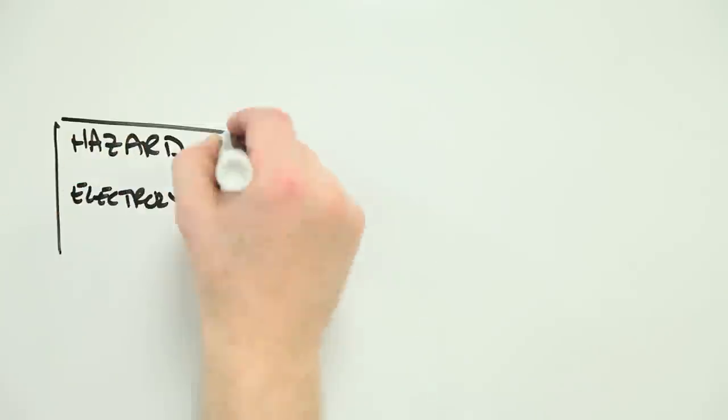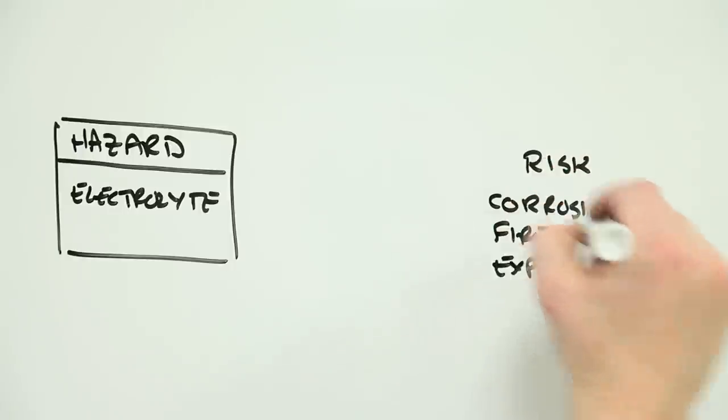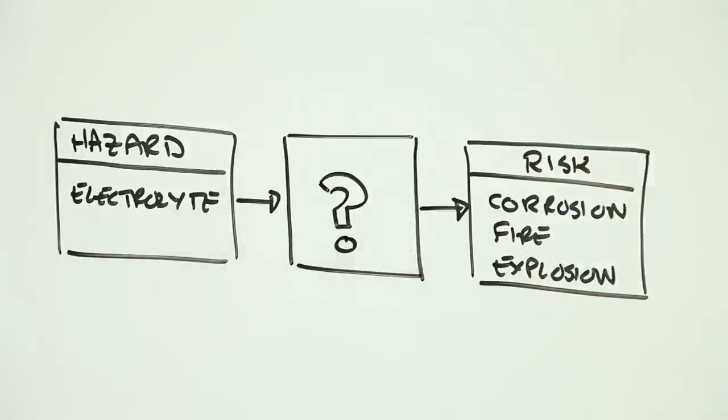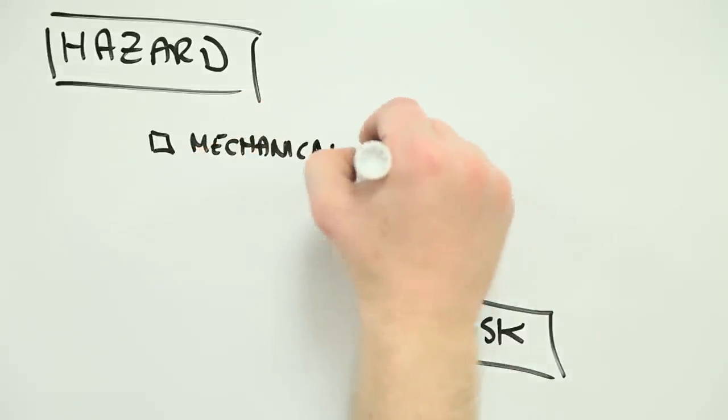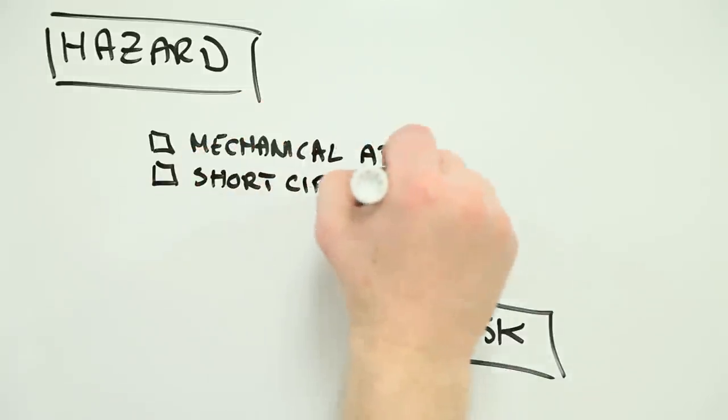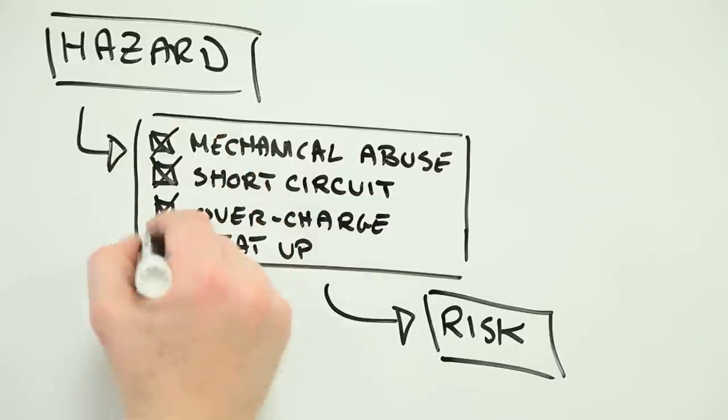But what are the wrong conditions that transform this hazard into a risk? There are four things you can do to a lithium-ion battery that transform its inherent hazard into a tangible risk. You can mechanically abuse it. You can short-circuit it. You can overcharge it. Or you can heat it up. None of these are a good idea.